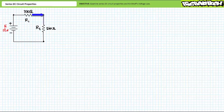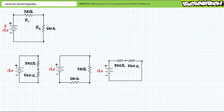Here is one example of a series circuit consisting of a 12-volt source, R1 having a value of 330 ohms, and R2 having a value of 560 ohms. If we were to visualize conventional current flowing through this system, you will note current would leave the positive terminal of the source and travel into resistor 1, through resistor 1, out of resistor 1, into resistor 2, through resistor 2, out of resistor 2, and into the negative terminal of the source.